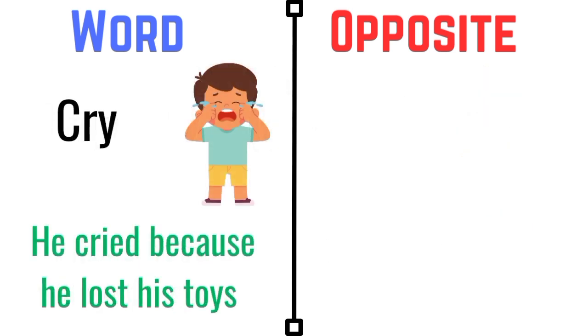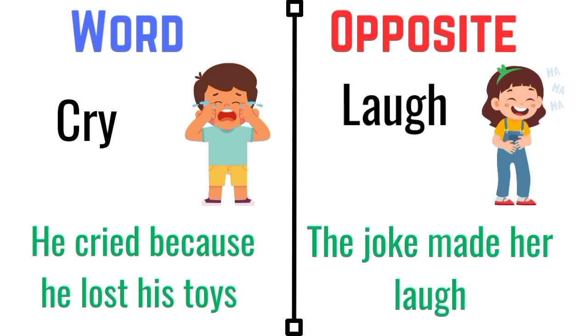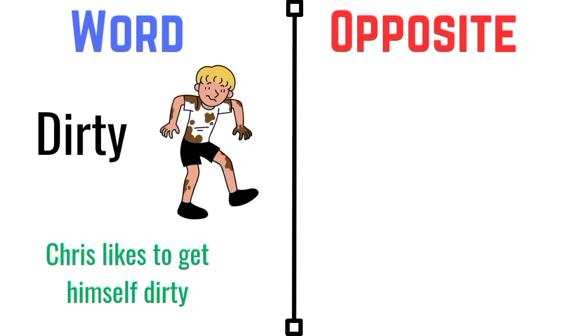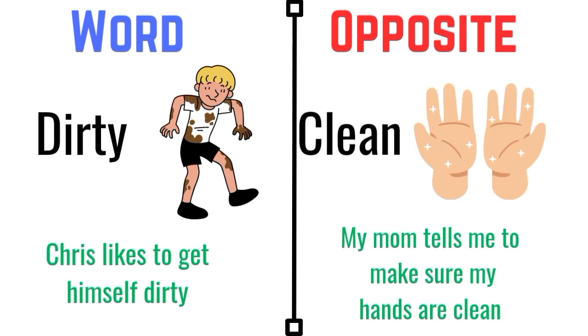Cry. He cried because he lost his toys. The opposite of cry is laugh. The joke made her laugh. Dirty. Chris likes to get himself dirty. The opposite of dirty is clean. My mom tells me to make sure my hands are clean.